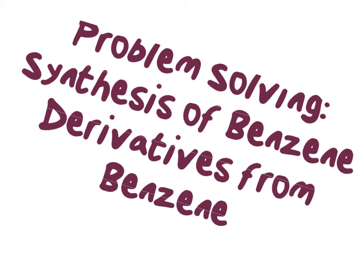In this video, we are going to review the last several videos on electrophilic substitution reactions and predicting reaction products by doing a couple of examples starting from benzene and showing how to synthesize benzene derivatives that have multiple substituents attached to them. Let's go ahead and look at these synthesis reactions and go through some strategies that will allow you to systematically determine how to make a particular organic molecule.